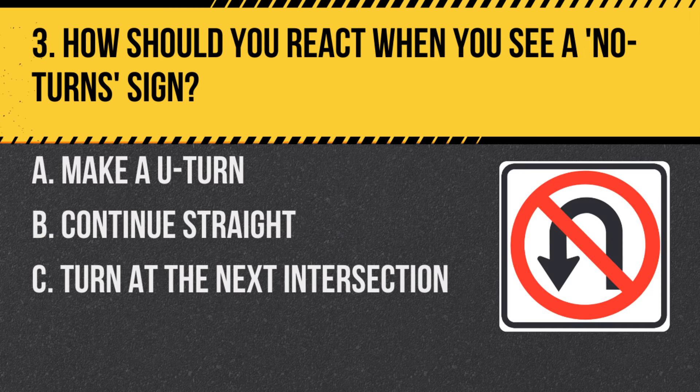Question 3: How should you react when you see a no-turn sign? A. Make a U-turn. B. Continue straight. C. Turn at the next intersection. Answer: B. Continue straight. A no-turn sign indicates that no turns are allowed at that intersection and you must continue straight.